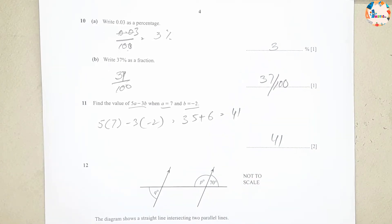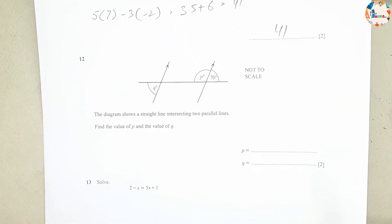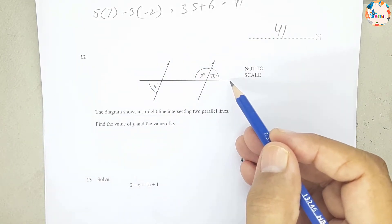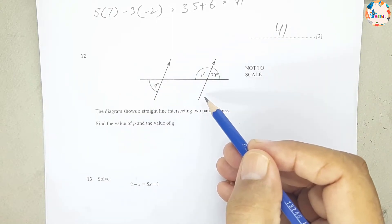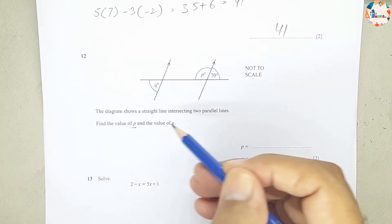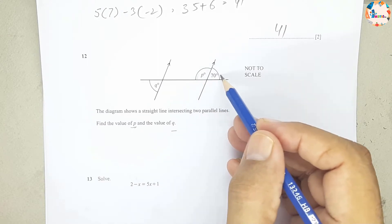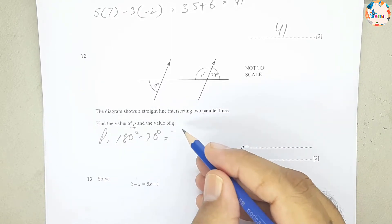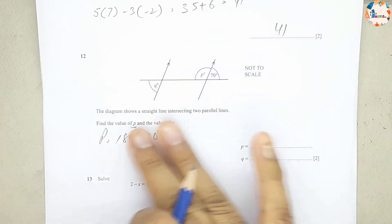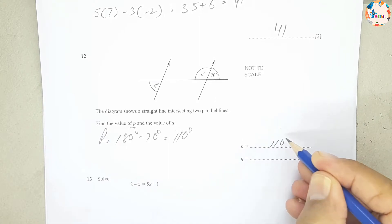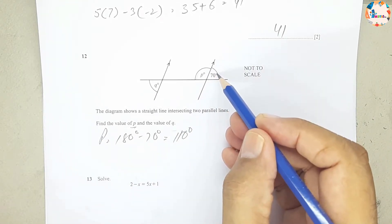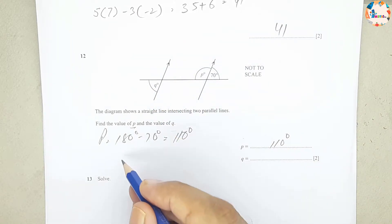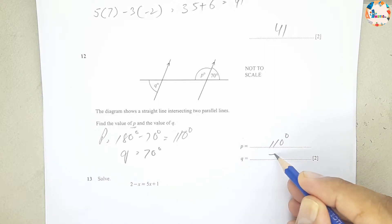Question number 12: a straight line intersects two parallel lines. Find the values of p and q. p = 180° − 70° = 110° (angles on a straight line). For q, using alternate angles, q = 70°.